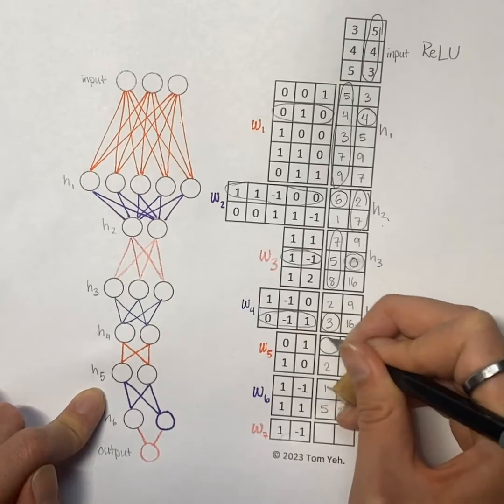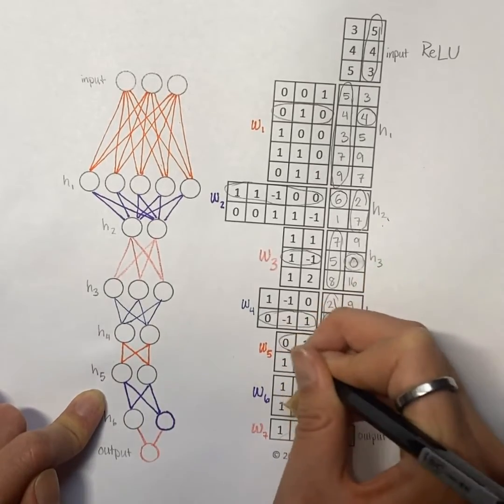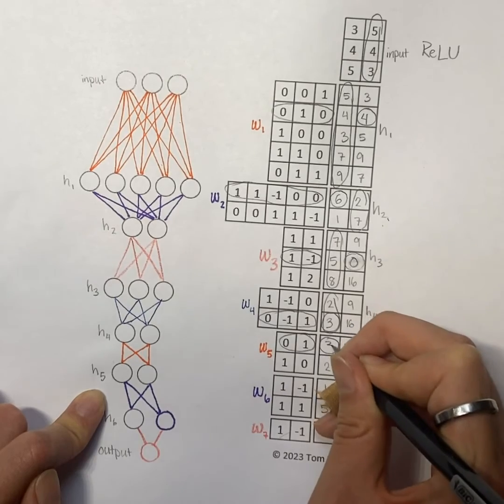For hidden layer 5, that is this column and this row, so we can see the value is 3.